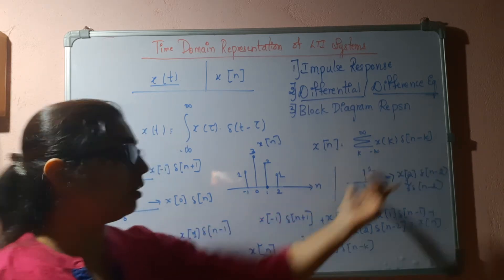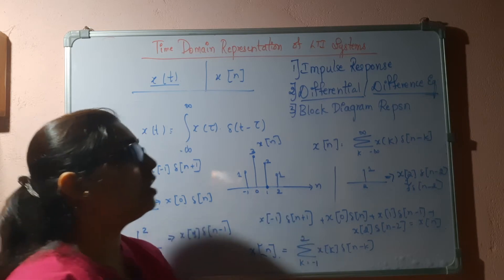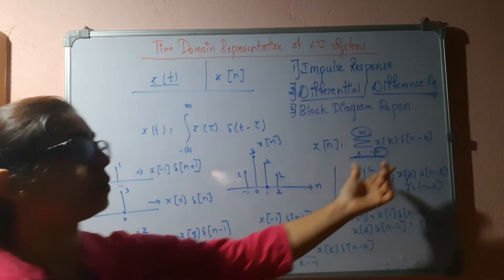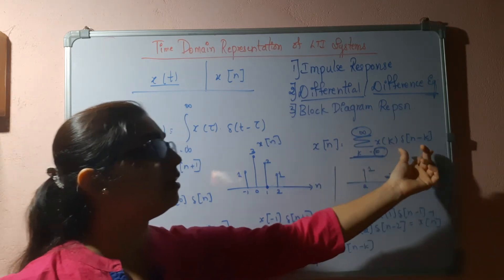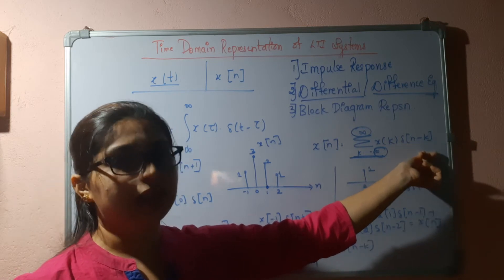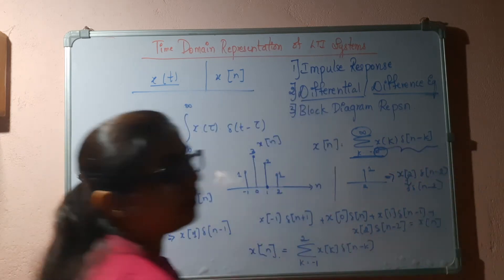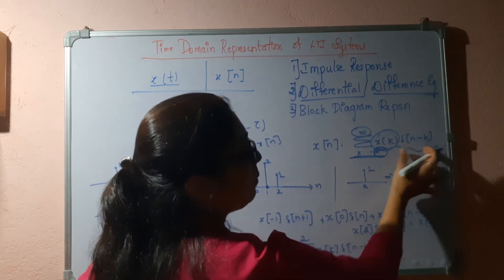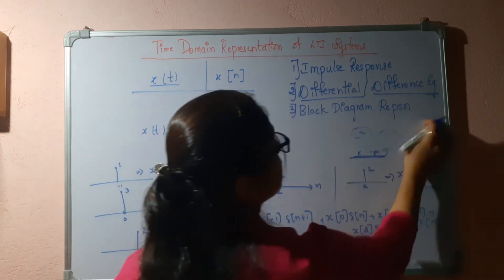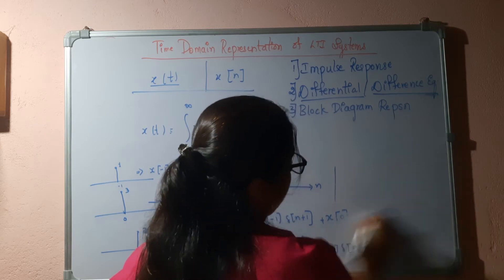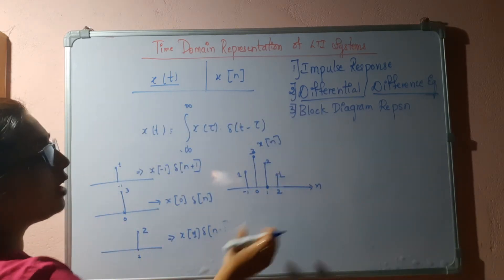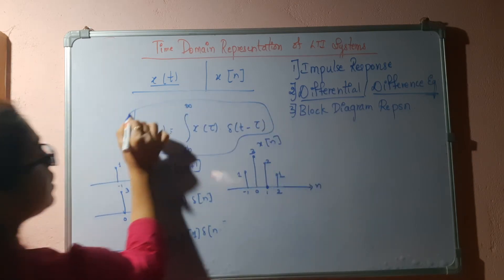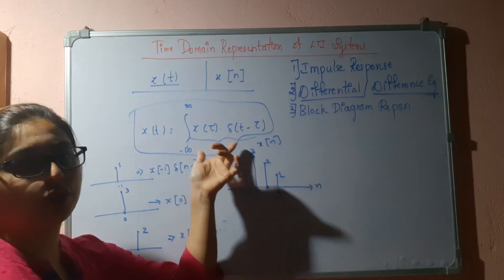Here I had considered only these samples, but in general we take the summation from minus infinity to infinity. This is how x(n) is written as a function of impulses — nothing but weighted time-shifted impulses, because each time-shifted impulse has a weight. It is a superposition of time-shifted impulses. Similarly, for the continuous time system, x(t) can also be written as the superposition of time-shifted impulses.